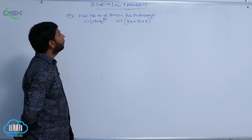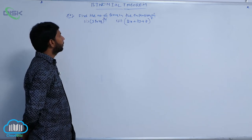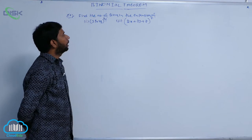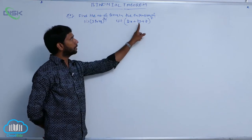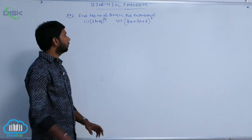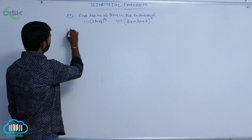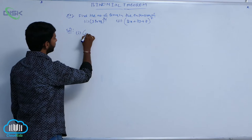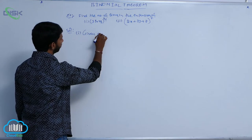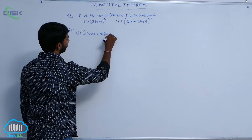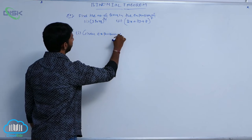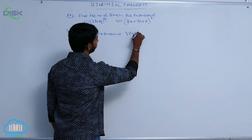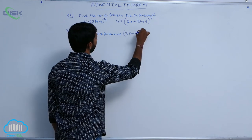Next one. Find the number of terms in the expansion of (3p + 4q)^14, and the second one is (2x + 3y + z)^7. The first one: the given expansion is (3p + 4q)^14.